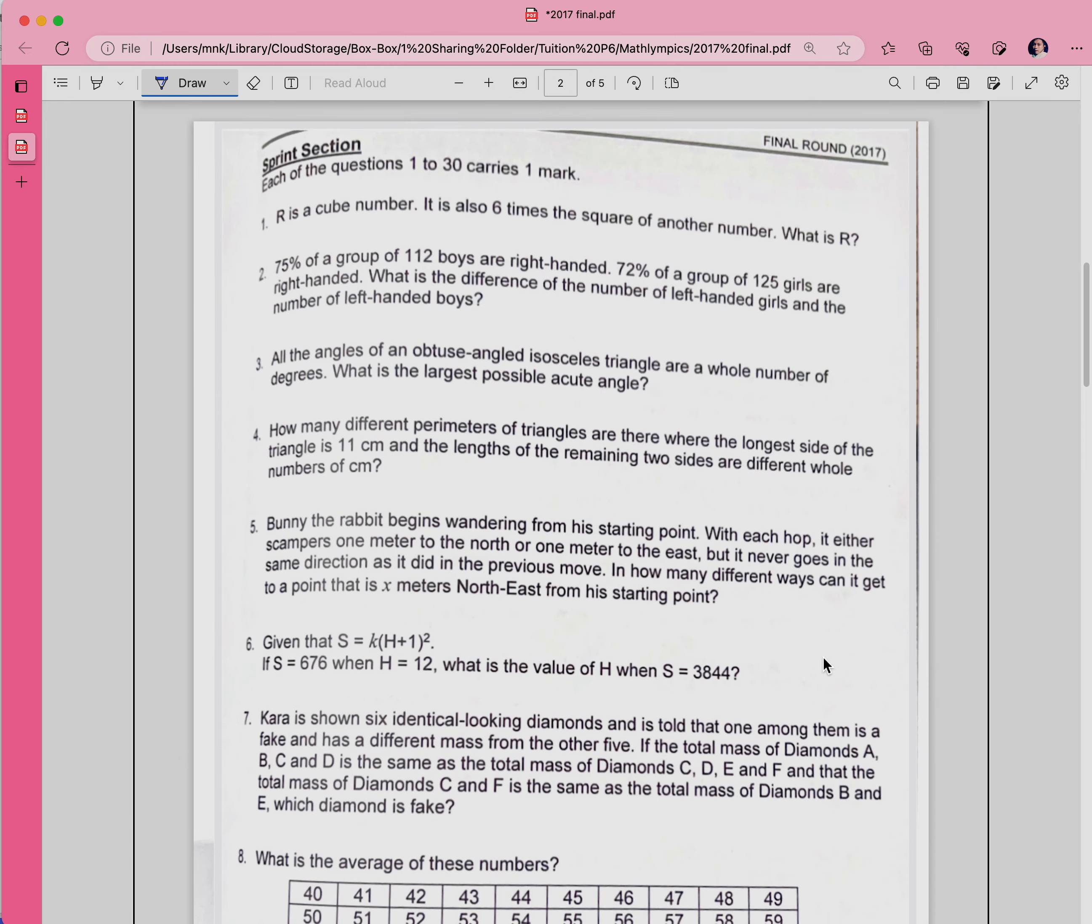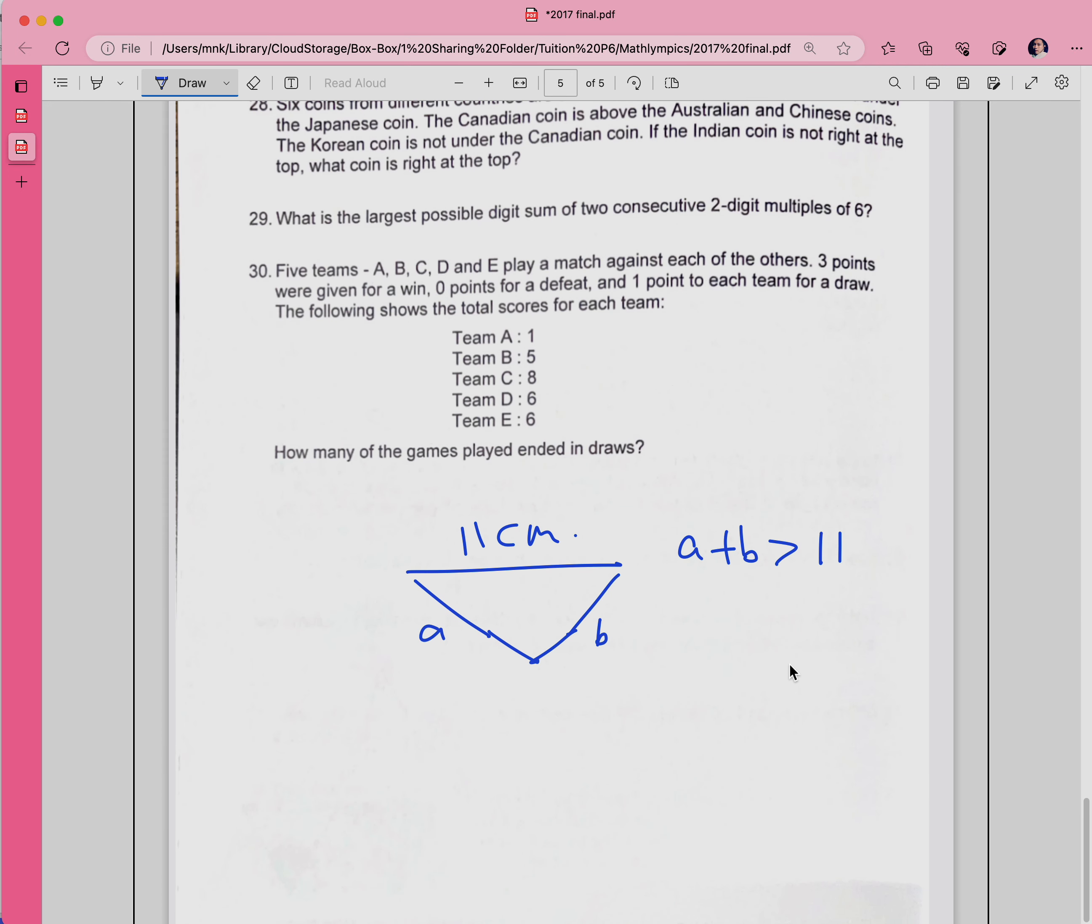How many different perimeters are there where the sides are different whole numbers? So a plus b must be bigger than 11, but since 11 is the longest, your a and b must be smaller than 11. You cannot choose 12 for one of them because 11 is the longest. So there are some restrictions here - these are the two restrictions.